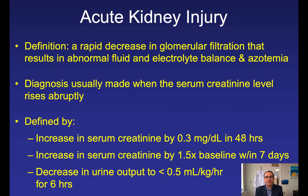The definition is a rapid decrease in glomerular filtration that results in abnormal fluid and electrolyte balance and azotemia. The diagnosis is usually made when the serum creatinine level rises abruptly. Formally, acute kidney injury is defined by either an increase in serum creatinine by 0.3 in 48 hours, or an increase by one and a half times baseline within seven days, or a decrease in urine output to less than 0.5 milliliters per kilogram per hour for six hours.